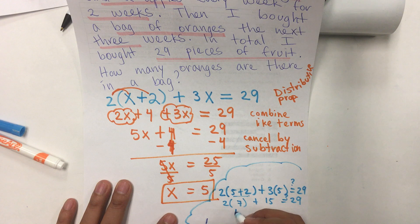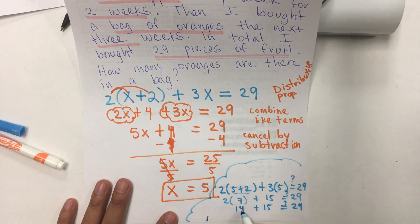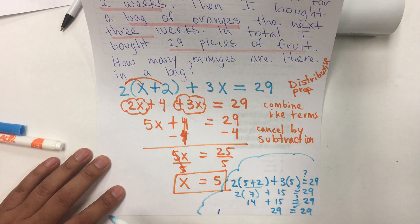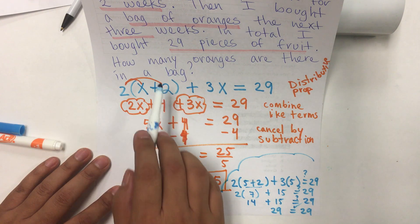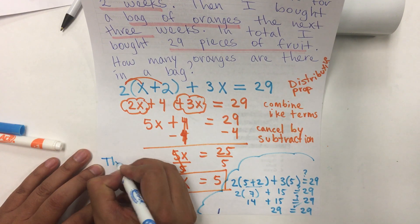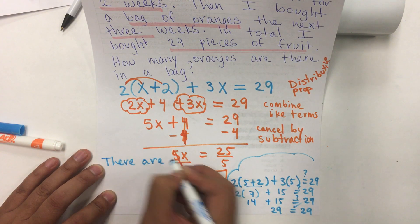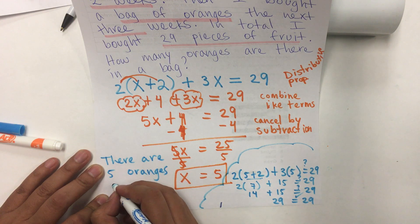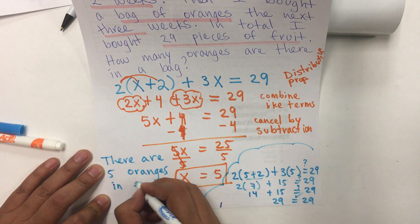And, then, 2 times 7 is 14 plus 15. Is it equal to 29? And, finally, 14 plus 15 is 29 equals 29. Since they come up equal, that means that, yes, our answer is correct. Now, don't forget to write the sentence because it says, how many oranges are there in a bag? So, there are 5 oranges in each bag.